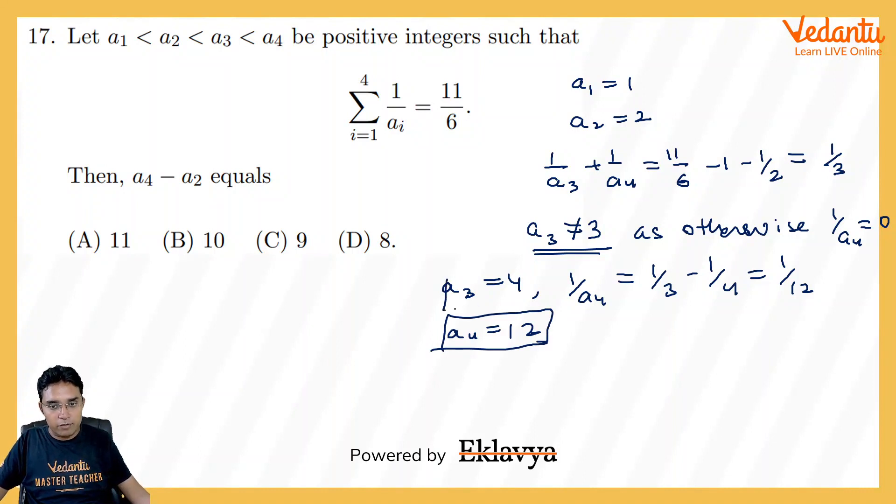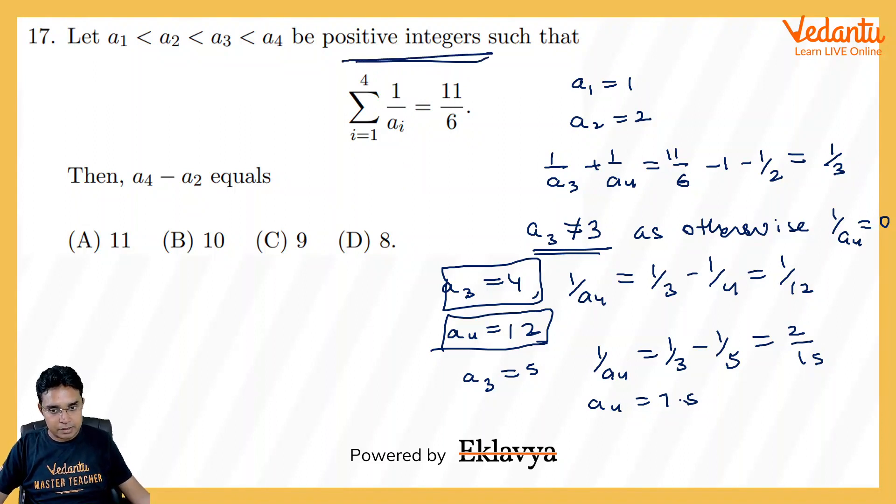But let us explore if other possibilities are also there or not. If I take a3 is equal to 5, if I take a3 is equal to 5, I think 1 upon a4 will be equal to 1 upon 3 minus 1 upon 5, which will give you 2 upon 15. That means a4 will be 7.5. That is not possible because we are looking for positive integers.